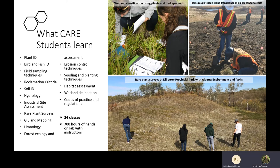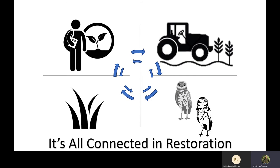In your second year of CARE, we take the introductory skills learned in first year and apply them deeper in more labs. Examples include applying techniques using mapping, GIS, and vegetation sampling to conduct rare plant surveys with Alberta Environment and Parks; identifying and delineating wetlands that are impacted every day; or doing plant transplants like rough fescue on orphan well sites with one of our industry partners. In CARE, we like to focus on how everything is connected — without learning the basics, we can't promote sustainable land use, which supports healthy ecosystems, wildlife species, and vegetation communities. It all works together.